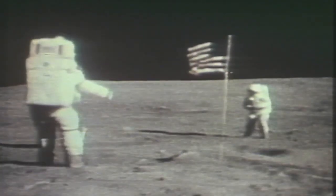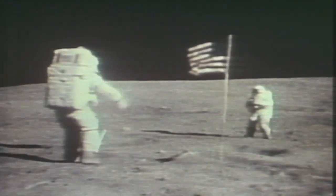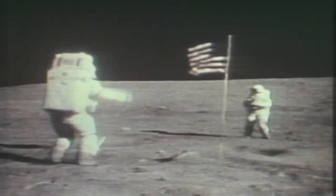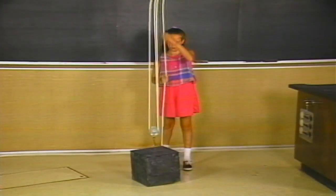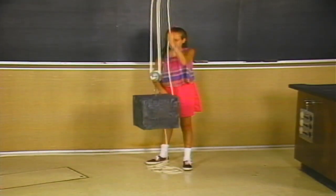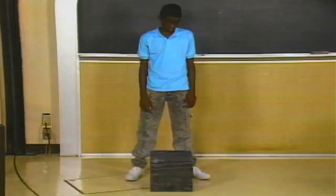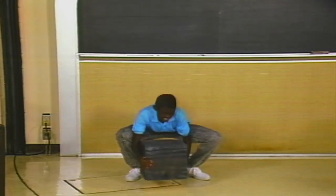This astronaut weighs 180 pounds on the Earth, but only 30 pounds on the moon. The force of gravity between the astronaut and the Earth is greater than between the astronaut and the moon. Karen is using a block and tackle, a simple machine, to lift a heavy object. Brian is doing the same amount of useful work without a machine.